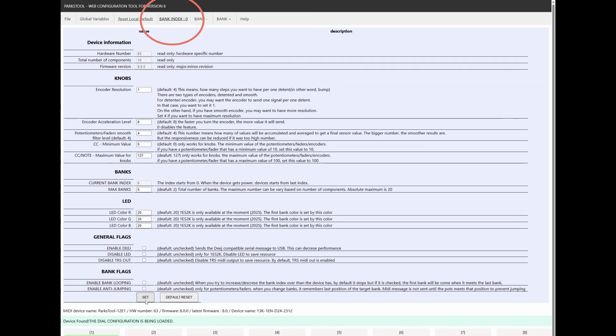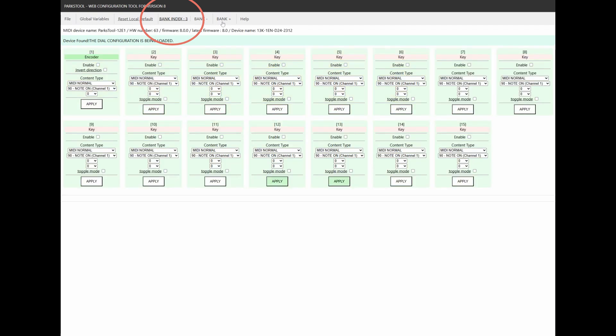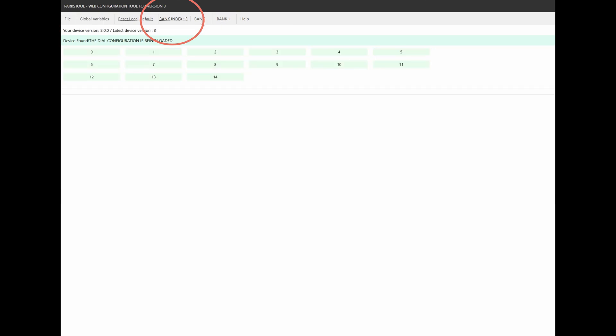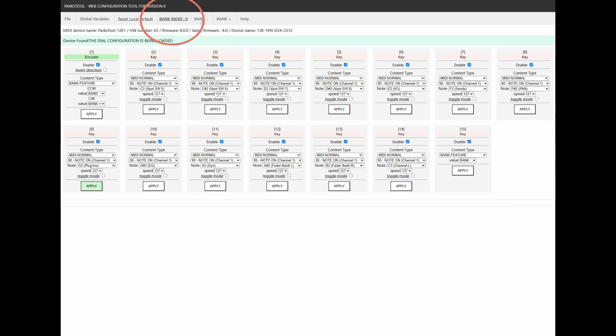Now the device has 5 banks. You can press the plus and minus buttons, and the Web Tool will display the current bank index. Each time you change the bank index, you need to configure the bank settings as needed. In this example, I press the Reset Local Default button to apply the default settings.